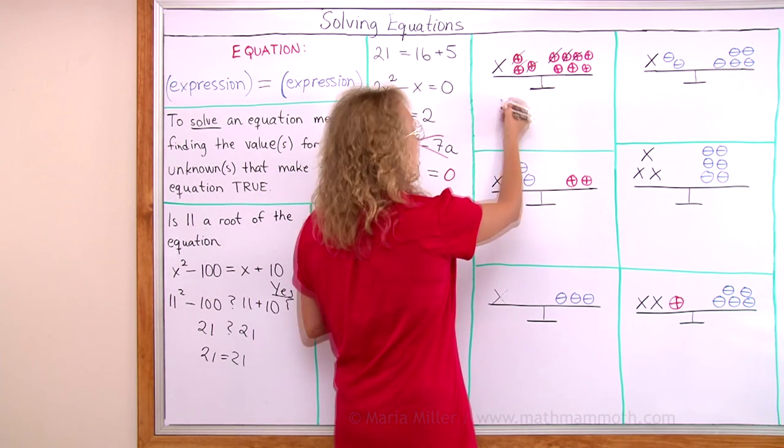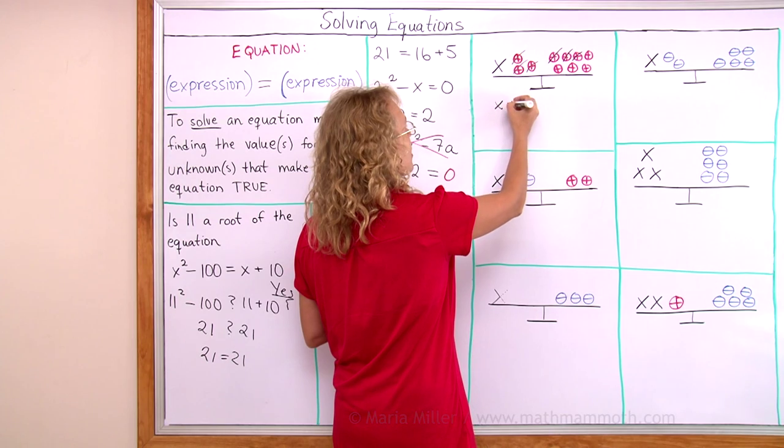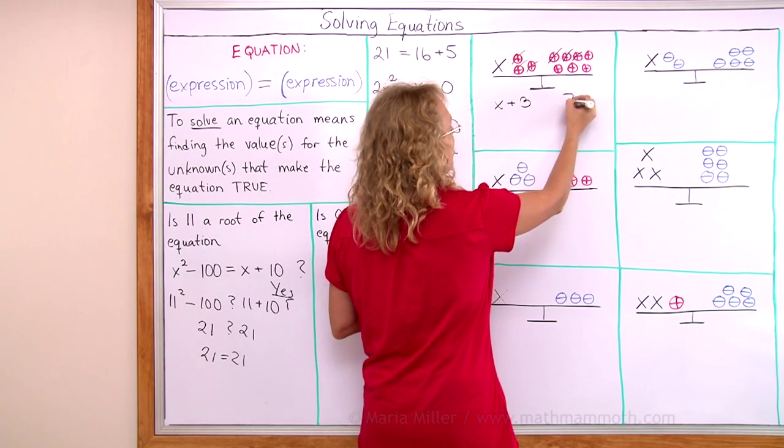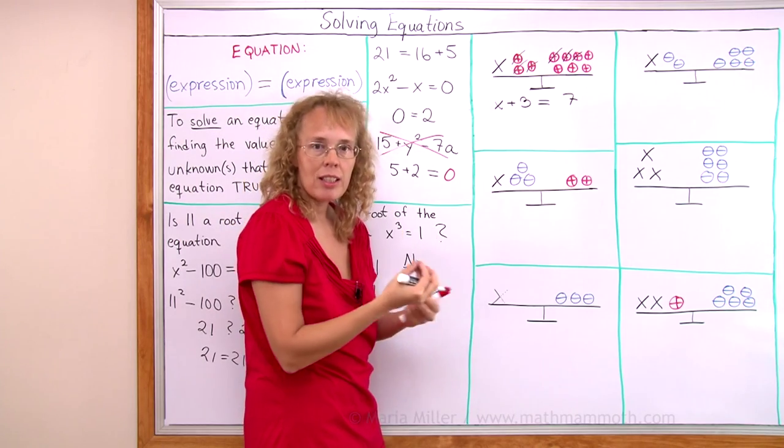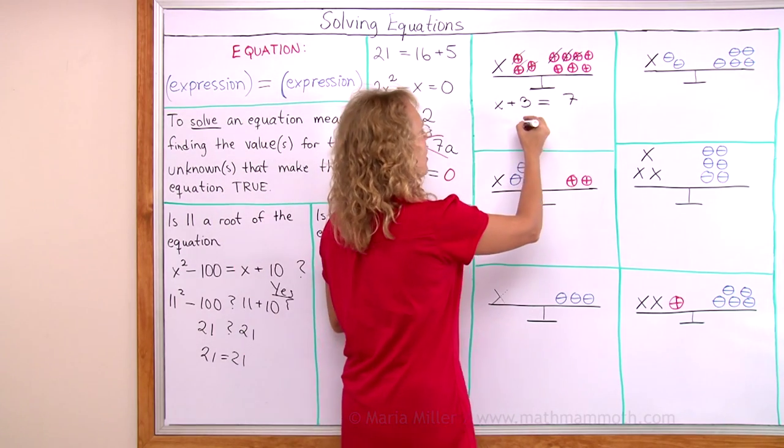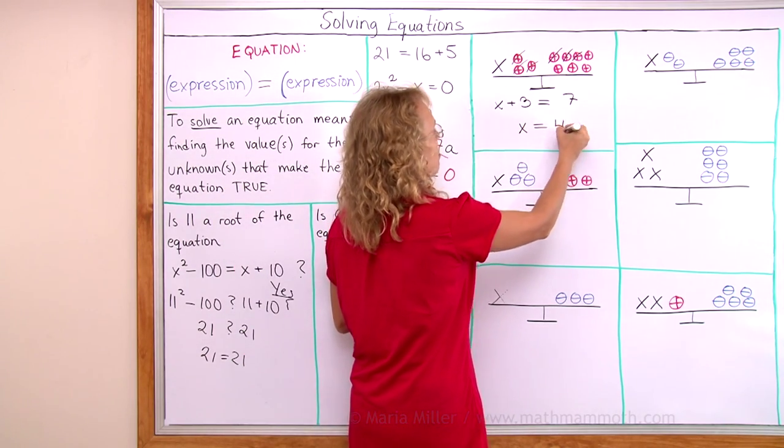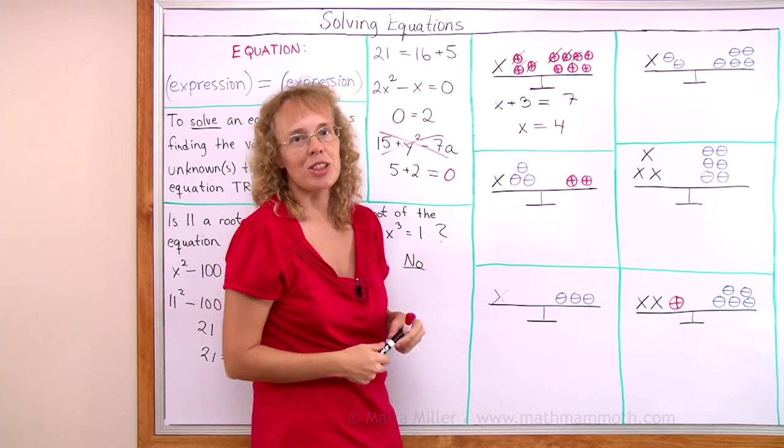Let me now write the original equation as it was. x plus 3 on this side, 7 on this side and they are equal. And then when I remove three counters from both sides, I will see that x has to equal four. So now I have solved the equation.